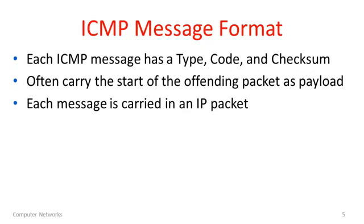Every ICMP message has an ICMP header that carries information about the type and code of the message as well as a checksum. Most ICMP messages also carry a portion of the offending packet — the trigger packet, the packet that encountered an error and caused this message to be generated. By carrying the start of that packet, as much of it as will fit in the ICMP message, we're returning that packet to whoever sent it so they can look at it and see what they did wrong.